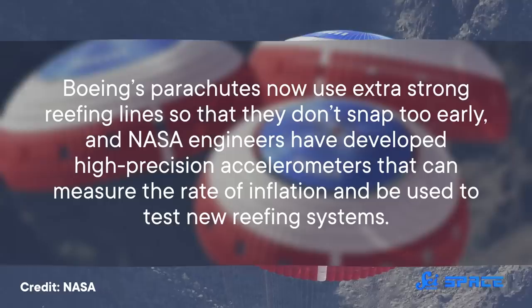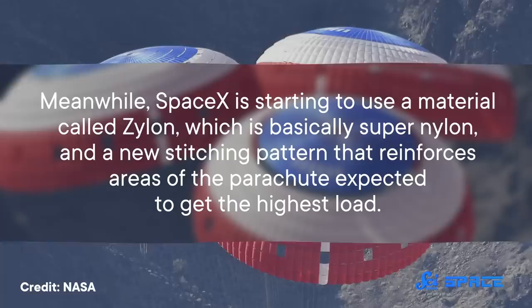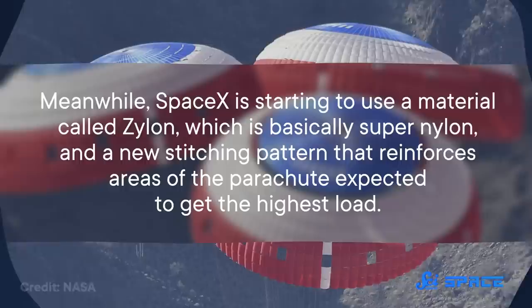Meanwhile, SpaceX is starting to use a material called Xylon, which is basically super-nylon, and a new stitching pattern that reinforces areas of the parachute expected to get the highest load. So they're basically assuming that asymmetrical loading is going to happen, and then working around it.